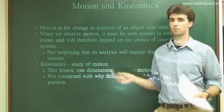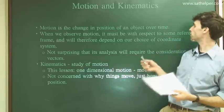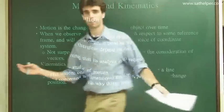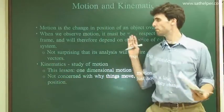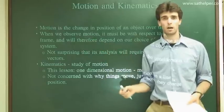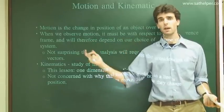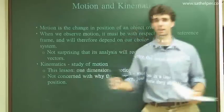So whenever we observe motion, it has to be relative to some reference frame. If I move back and forth across the screen here, that's because I'm moving relative to the frame. If I were very careful and clever, I could have somebody move the frame behind me and it would also look like I was gliding back and forth.